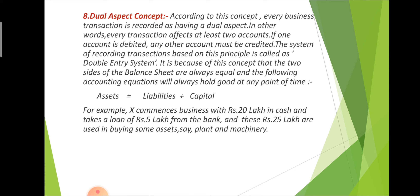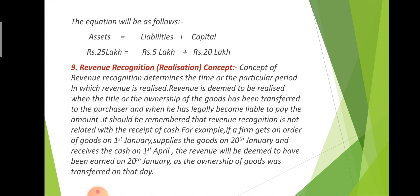The formula applied here is: Assets = Liabilities + Capital. For example, X commences business with rupees 20 lakh — that is the capital of X. X also takes a loan of 5 lakh from the bank, so X invests a total of 25 lakh: 20 lakh own money and 5 lakh from the bank. The 5 lakh is under liabilities. Total assets equal 25 lakh, which equals liabilities (5 lakh) plus capital (20 lakh). Both sides are equal.